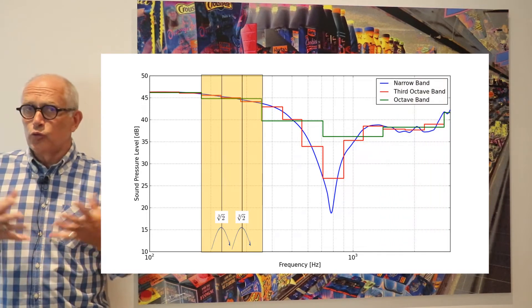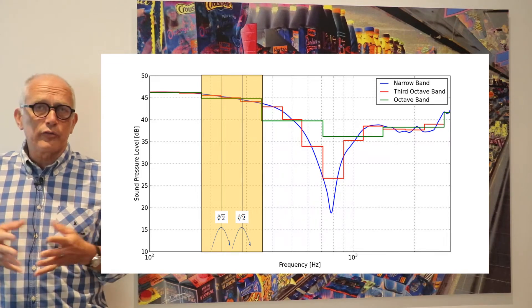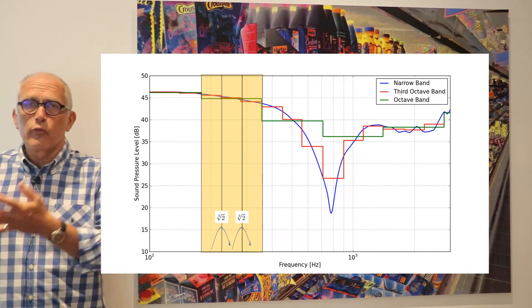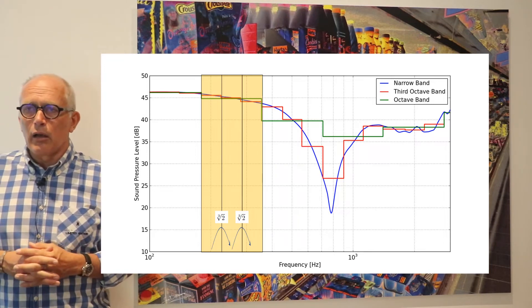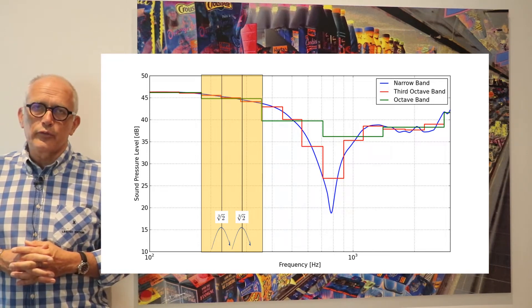Sometimes octave bands are too large because they go, for instance, from 1,000 to 2,000 or from 2,000 to 4,000, which is indeed a very broad frequency range.